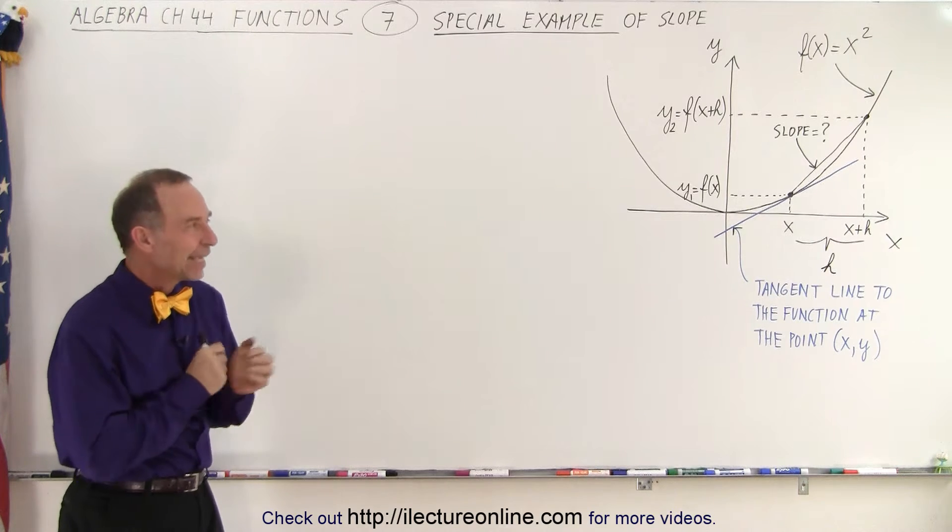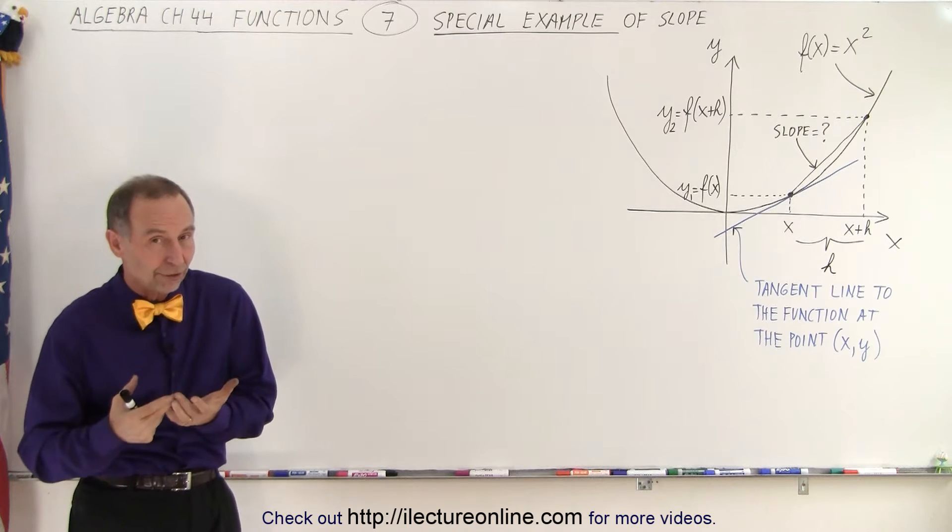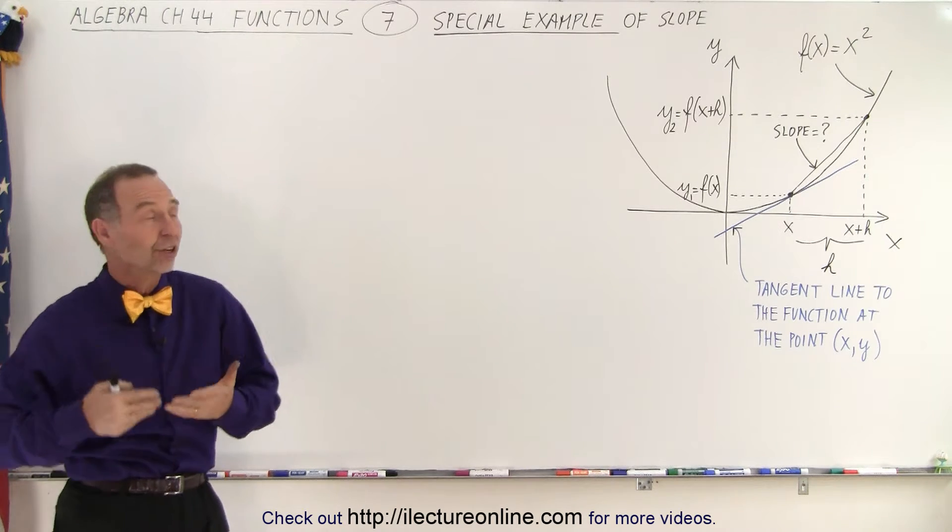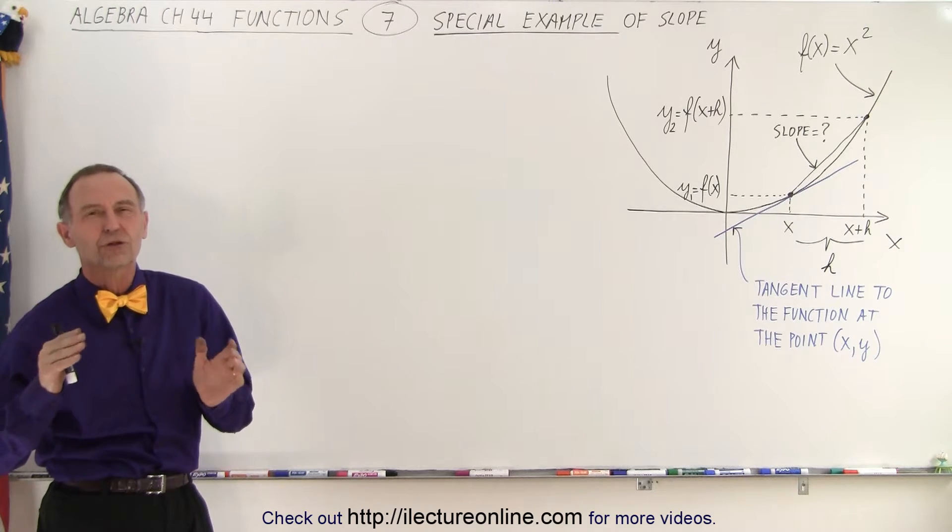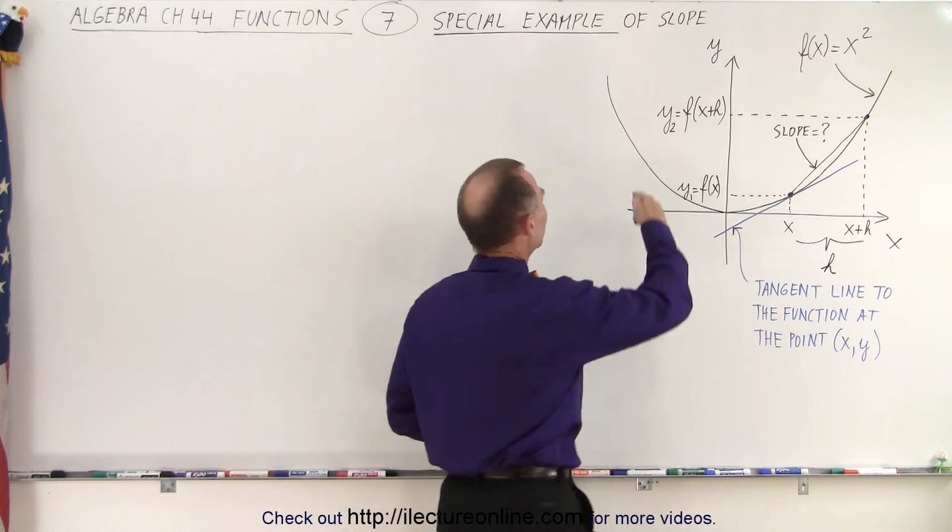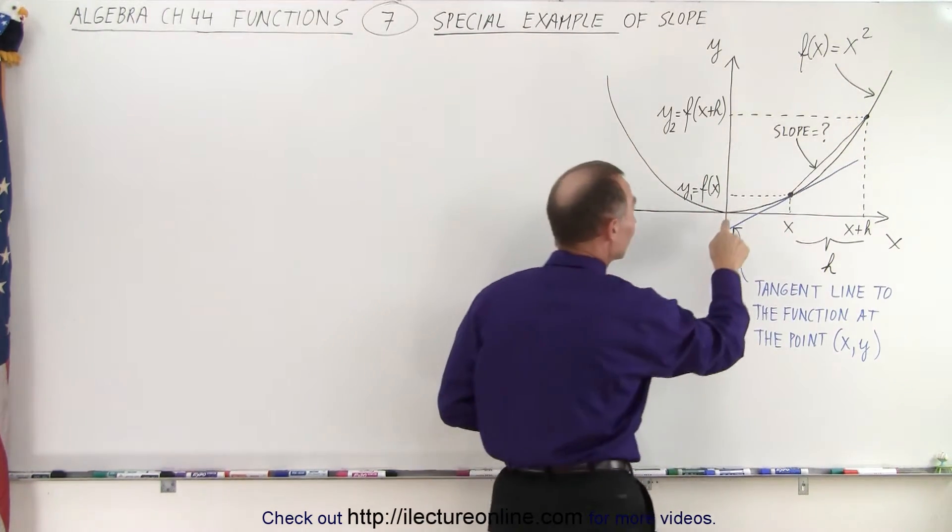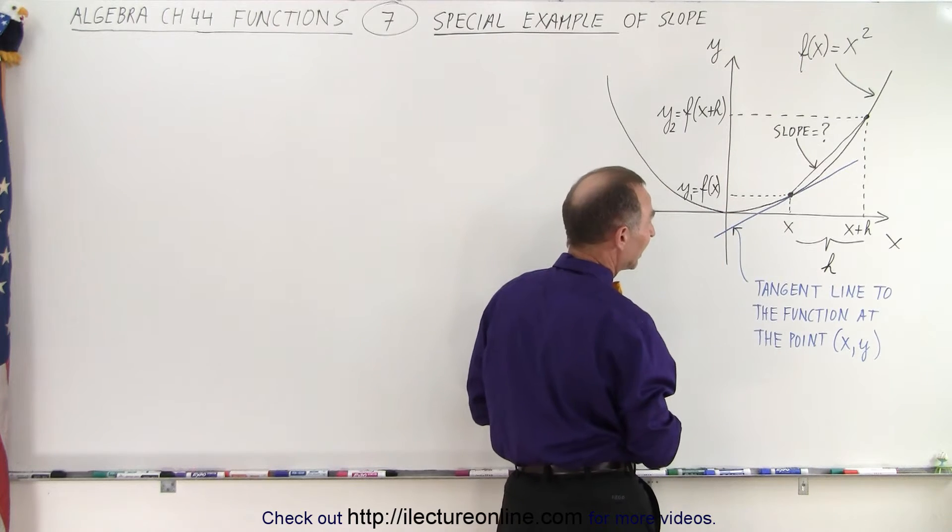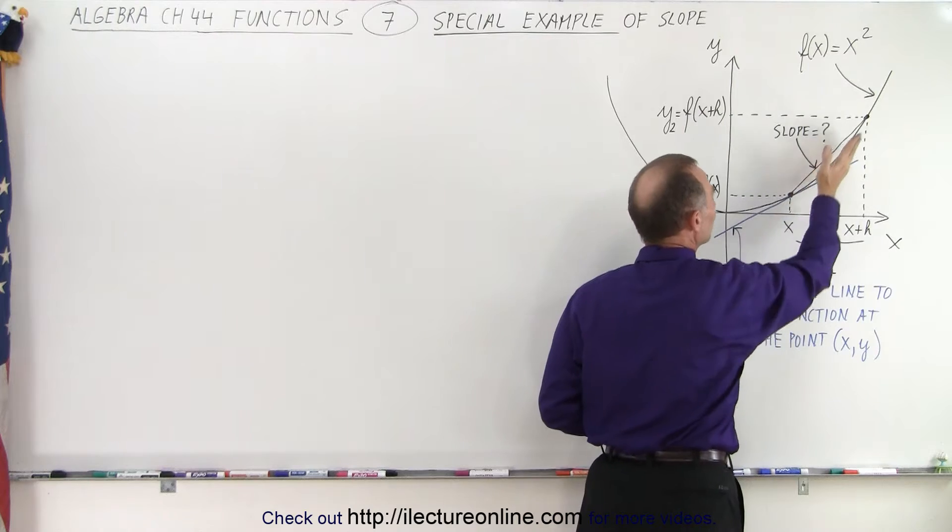Welcome to iLectureOnline. Here we're going to take the notation that we've become familiar with for functions in algebra, and we're going to use it to find the general equation of a slope. What we're going to do here is take a look at our function f(x) = x², which is simply a parabola that has the vertex right here at the origin. You can see here that the slope changes constantly, gets steeper and steeper and steeper.